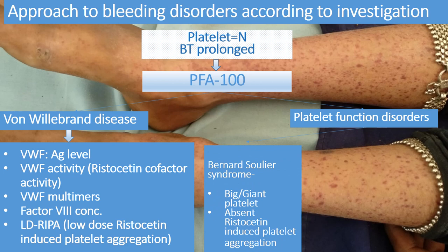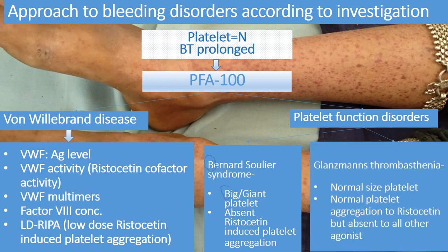If VWD workup is normal and platelet function disorder is suspected, consider Bernard-Soulier syndrome, in which platelet size is large — 'big platelet, big B, Bernard-Soulier' — and ristocetin-induced platelet aggregation will be absent. In Glanzmann's thrombasthenia, platelet size is normal and platelet aggregation to ristocetin is normal, but aggregation to all other agonists is absent. By this we can easily differentiate these two conditions.